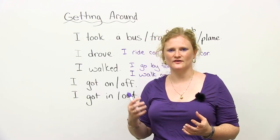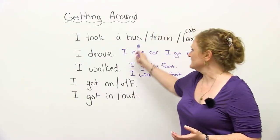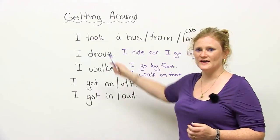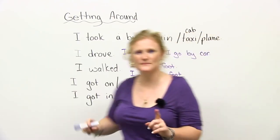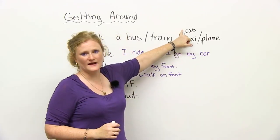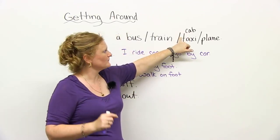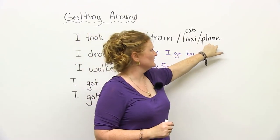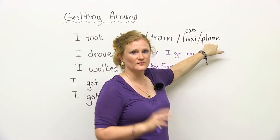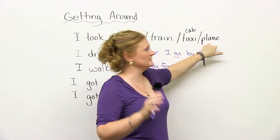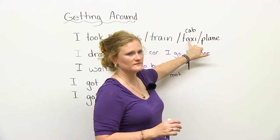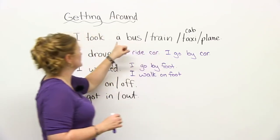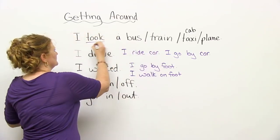We have different ways of getting places. Verbs. You can say, I took a bus, a train, a cab, or a taxi. Cab and taxi are the same. Or you can take a plane. So, with all of these nouns, plane, cab, taxi, train, bus, you're going to use the verb took.